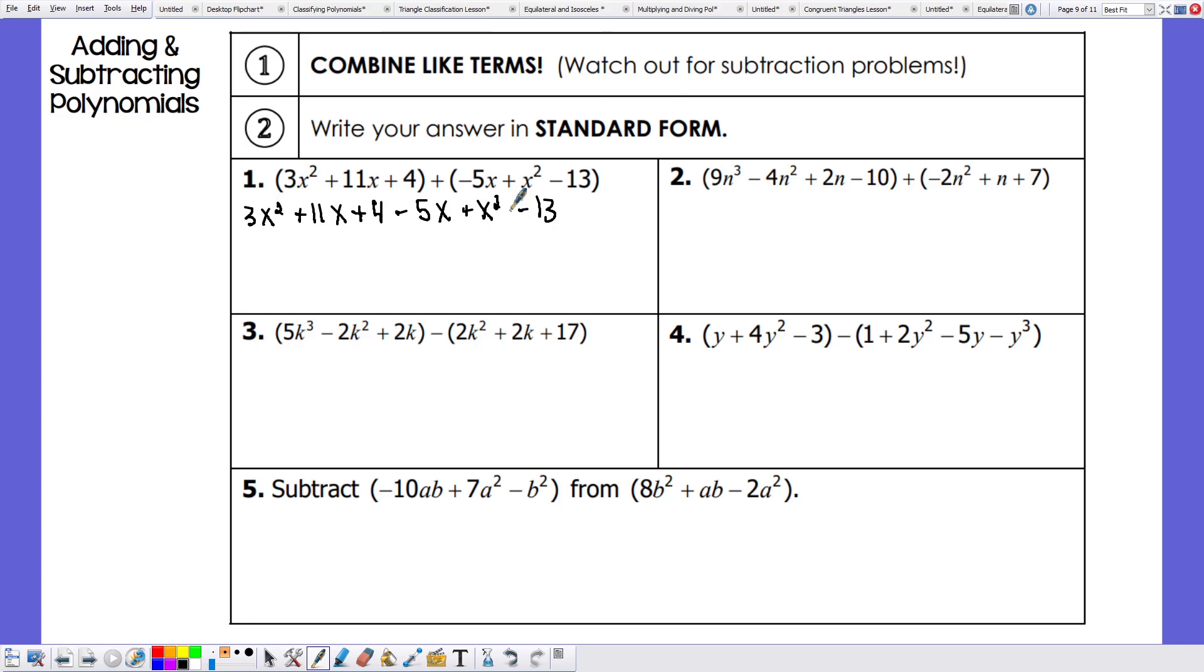Now let's combine our like terms. We have a 3x squared and a regular x squared. So if I have 3x squareds and I add another one to it, I then have 4x squareds. Now my next pair of like terms would be 11x and negative 5x. So 11 minus 5 is 6, so we have 6x. Finally, we have positive 4 minus 13, which gives us negative 9. And this is our two polynomials added together.